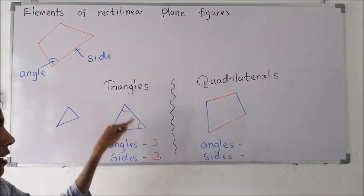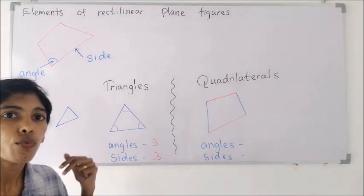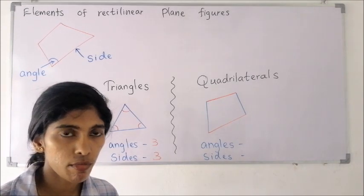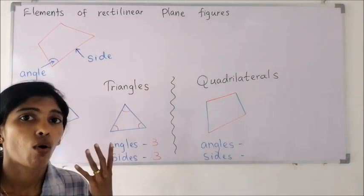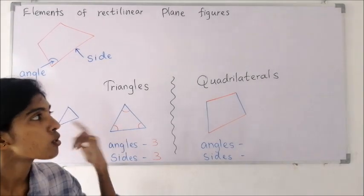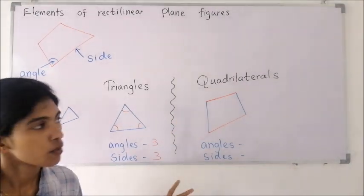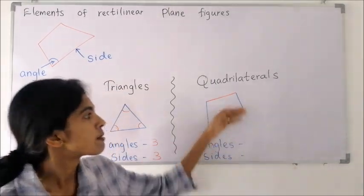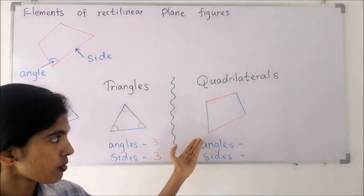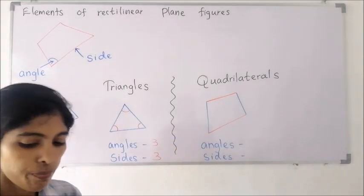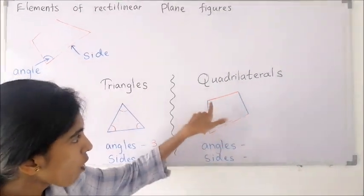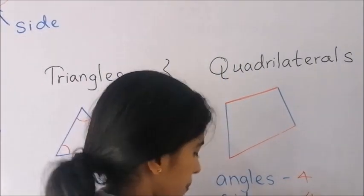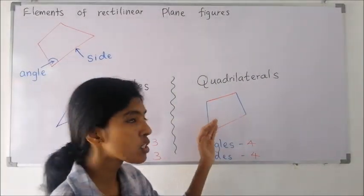With four straight line segments we can form rectilinear plane figures. A rectilinear plane figure made with four straight line segments is called a quadrilateral. I have drawn this with two different colors — I will explain the reason later. In this quadrilateral there are four angles and four sides.